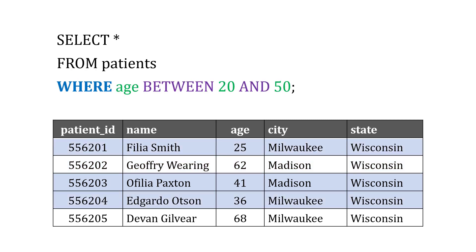Another way to do this is for numbers to use BETWEEN. So we could say WHERE the age is between 20 and 50. It doesn't have to be just greater than 20 or less than 50 — we can use BETWEEN to provide a range. What's important to note, though, is that BETWEEN is going to include 20 and 50.